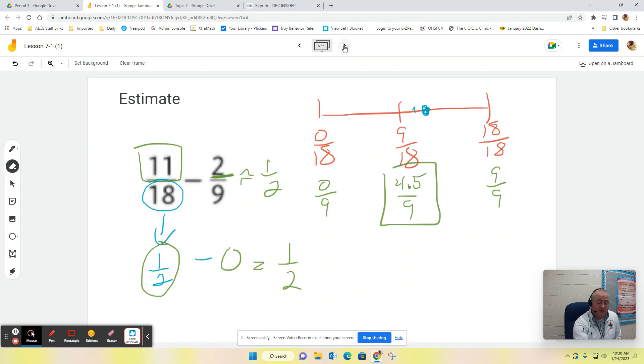So again, you can still use the number line. That still works very effectively. If you look at the denominators, you can also cut that denominator in half and then compare that with your numerator. To kind of give you an idea of whether it's going to be zero, a half, or a whole.